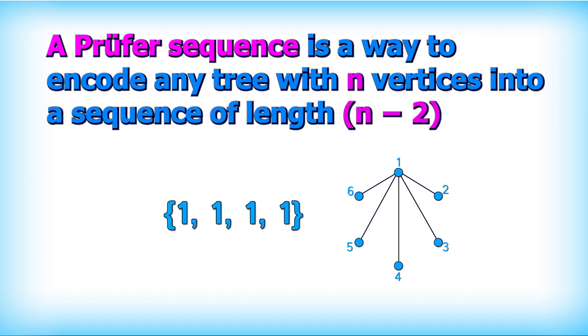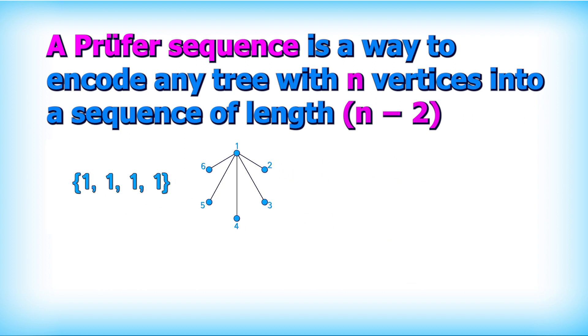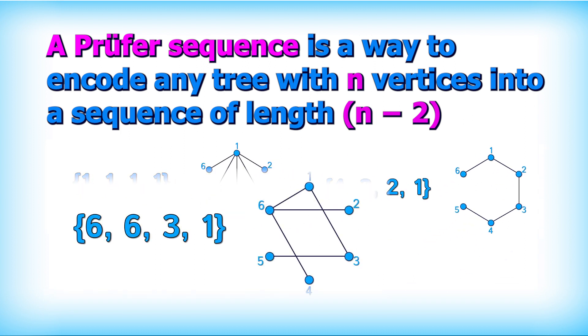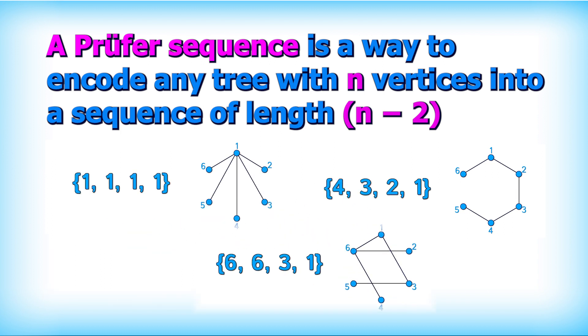This tree has proof of sequence 1, 1, 1, 1. This tree has proof of sequence 4, 3, 2, 1. And this one 6, 6, 3, 1. So because there's 4 numbers in the sequence and each one has 6 choices,